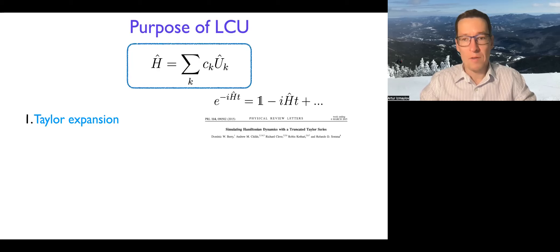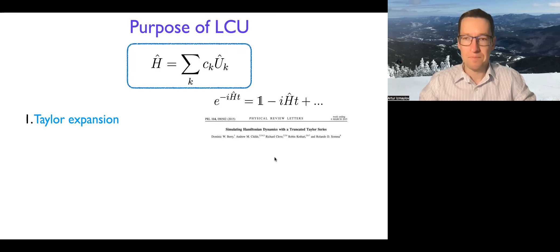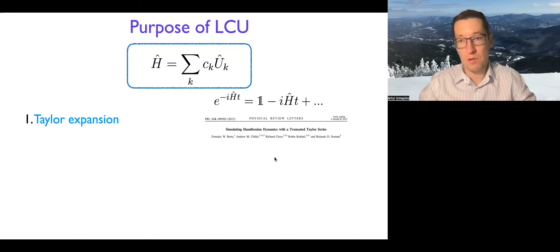One simple approach is Taylor expansion, where the Hamiltonian is decomposed into LCU, and then that is used to apply Hamiltonian powers instead of an actual propagator — the exponent. That's one way to use LCU, because the quantum computer understands unitaries, and it is useful to encode the Hamiltonian, which is not unitary, in terms of unitaries.